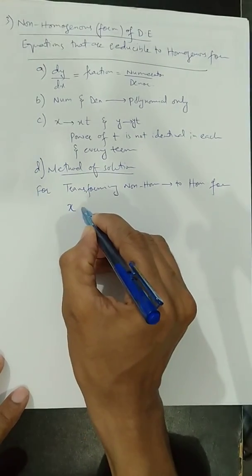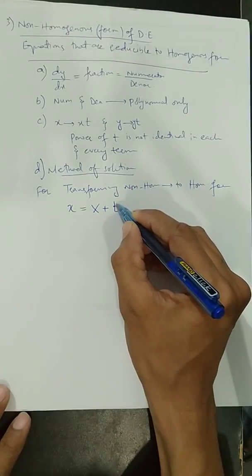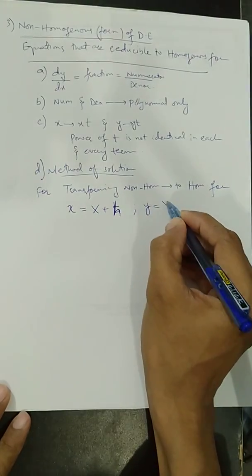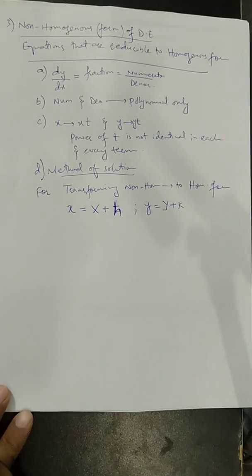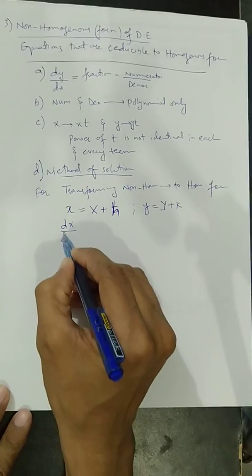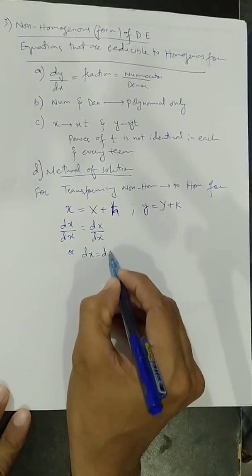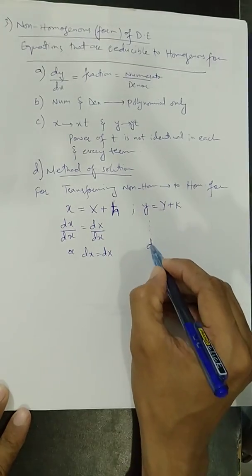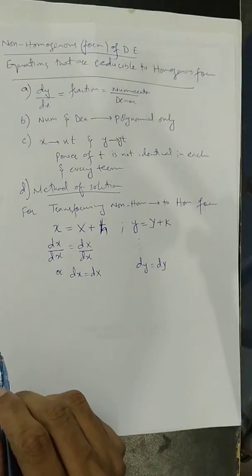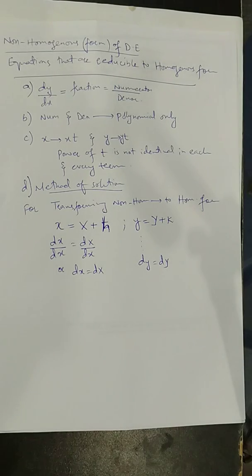The method is: we substitute x equal to capital X plus h, and y equal to capital Y plus k, where h and k are arbitrary constants. Whenever we introduce a new variable we differentiate at least once, so the derivative gives us dX equals d(small x) and dY equals d(small y). There is no complex transformation here — just that d(capital X) equals d(small x) and d(capital Y) equals d(small y). After this substitution the equation will be reduced to homogeneous form.